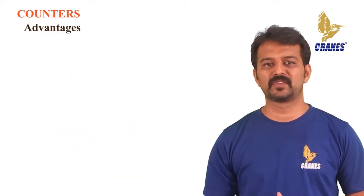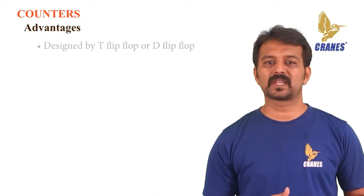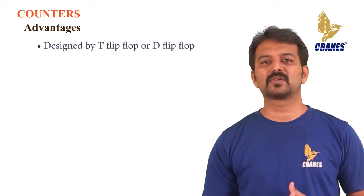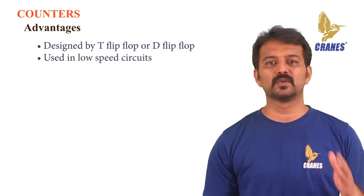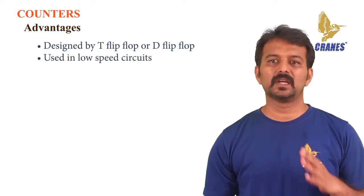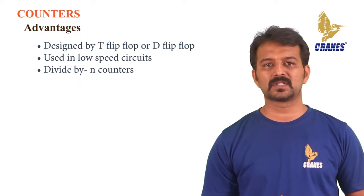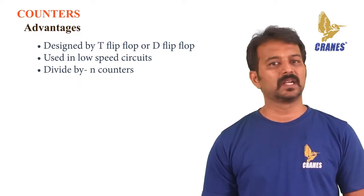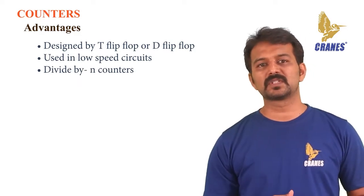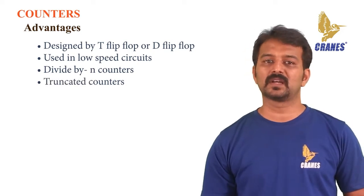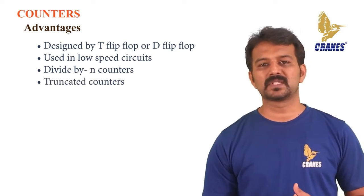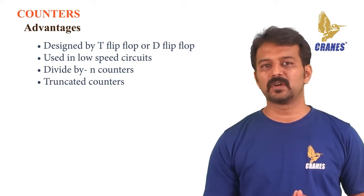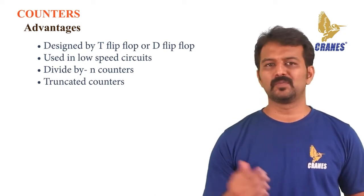Let's look at the advantages of asynchronous counters. They can be easily designed using T flip-flops or D flip-flops. These are also called ripple counters and are used in low-speed circuits. They are used as divide-by-N counters, which divide the input by N where N is an integer. They can also be used to design any mod-number counter — for example, mod 4 or mod 3.